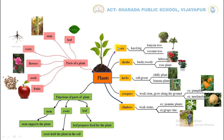The five types of plants are trees, shrubs, herbs, creepers, and climbers. Trees are hard and big plants; they live for many years. For example, banyan tree and coconut tree. Shrubs are bushy and woody plants; they live for a few years. For example, hibiscus plant and rose plant.